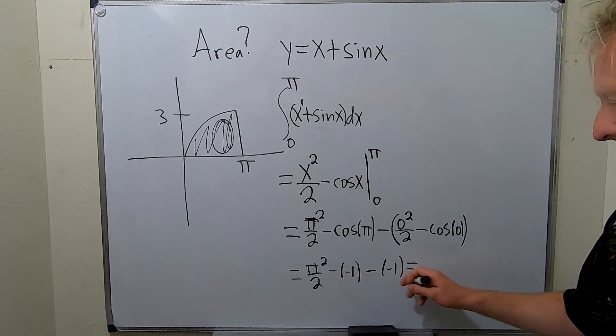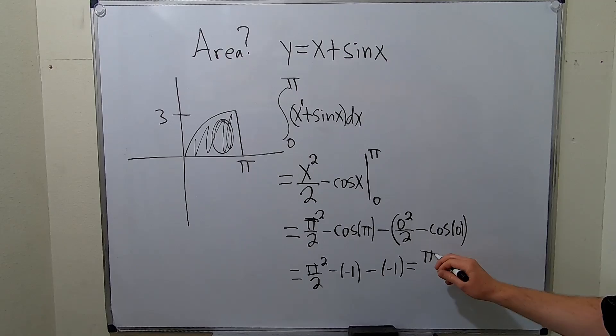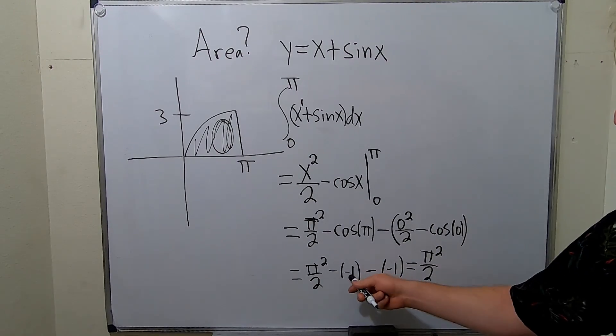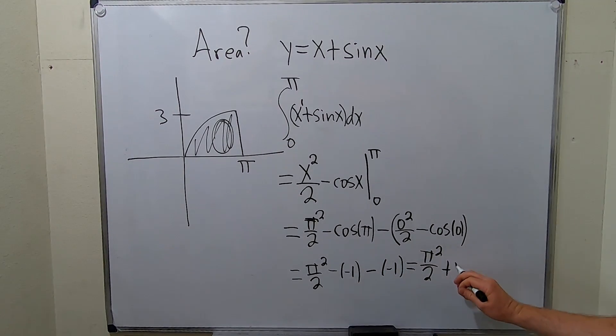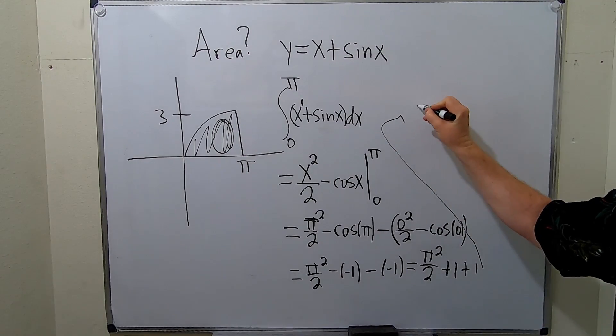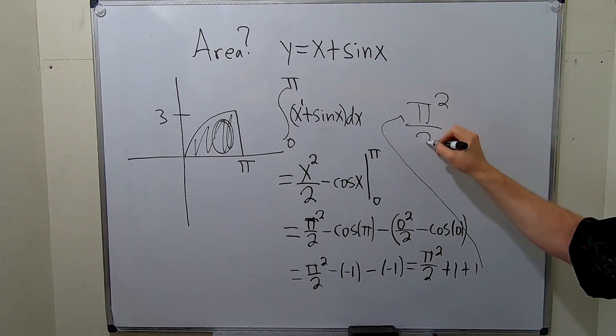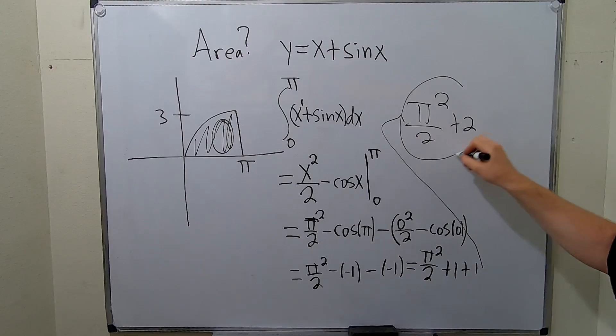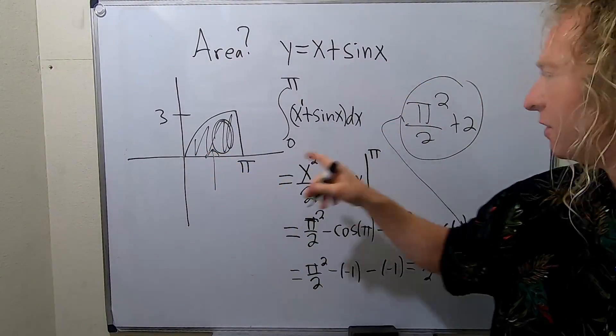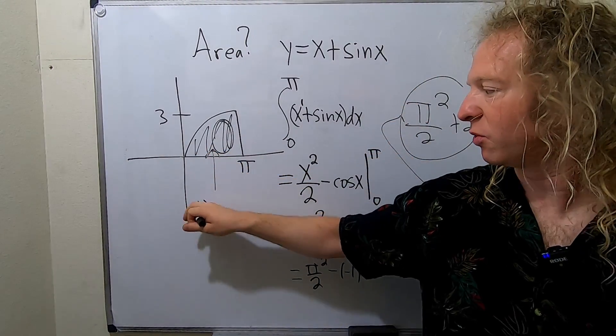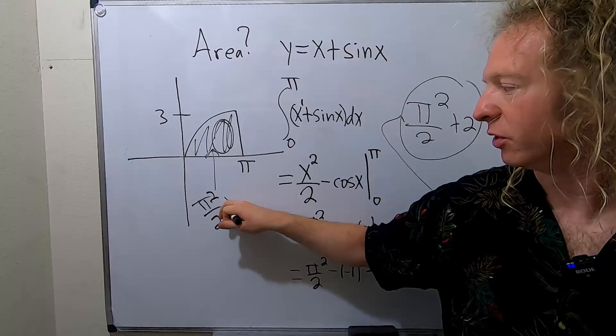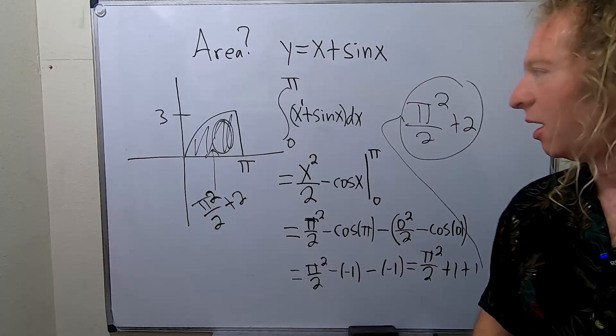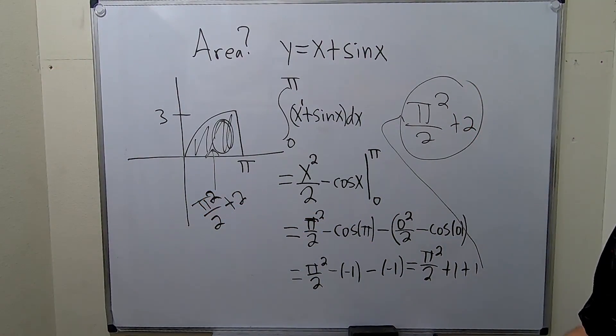So this is equal to pi squared over 2 and then 1 plus 1 plus 1 because these will both become pluses. So we end up with pi squared over 2 plus 2. This is the area. This area is given by pi squared over 2 plus 2. Kind of cool. Kind of a cool answer. We got some pies in the mix.